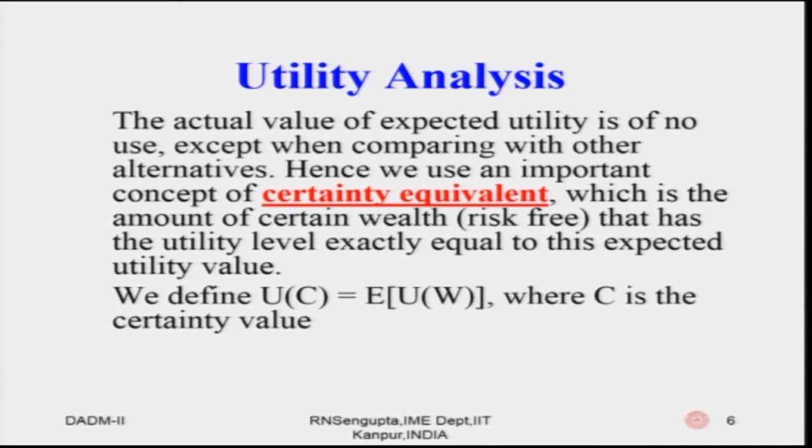Consider a value C — which can be in rupees, dollars, or any amount of wealth. We find its utility by computing U(C), and if that U(C) exactly matches the expected utility of a non-deterministic event, then we say that C is the certainty equivalent. That means we are equally disposed between the gamble and the certainty value — we are finding a one-to-one equality based on matching expected values.